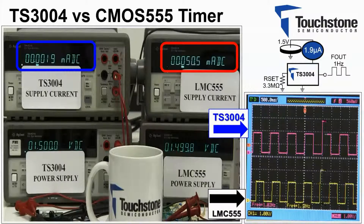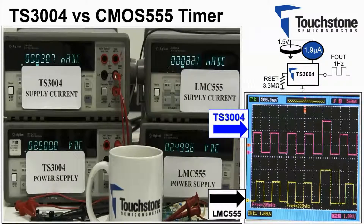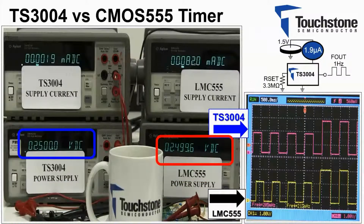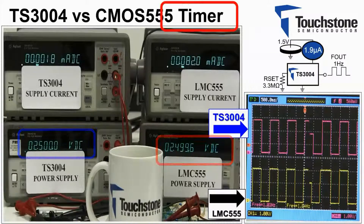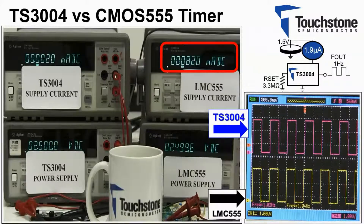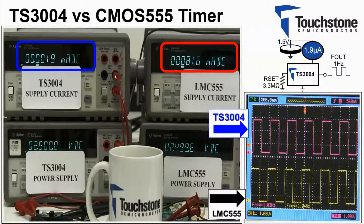Now applying a 2.5 volt supply, as displayed here. The CMOS 555 is consuming 81 microamps of current, while the TS3004 is still only demanding 2 microamps of supply current.